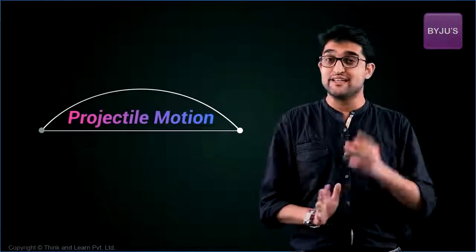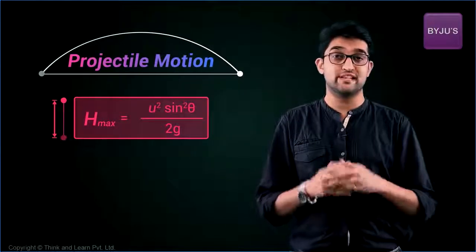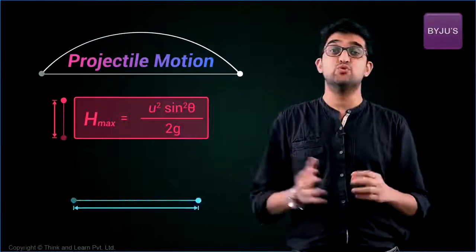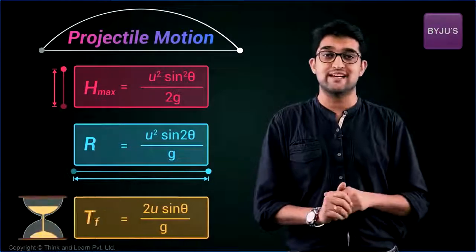As far as your syllabus is concerned, projectile motion is actually three formulas. Maximum height that's u square sine square theta by 2g, range that's u square sine 2 theta by g, and time that's 2u sine theta by g.